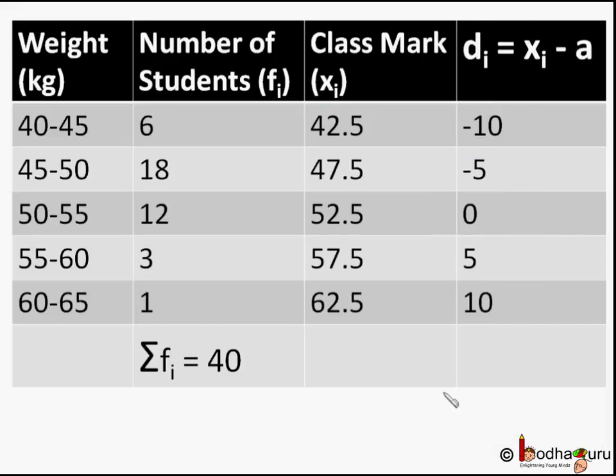Now we subtract the assumed mean A equal to 52.5 from every class mark. That will give us the difference between xi and A. That is a deviation of A from each of the xi. We denote it by di. So for the first row, d1 equals 42.5 minus 52.5, x1 minus A, which is equal to minus 10. For second row, d2 equals 47.5 minus 52.5, x2 minus A, which is equal to minus 5, and so on.